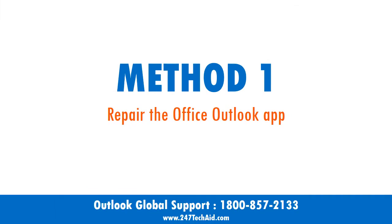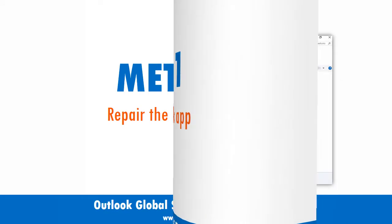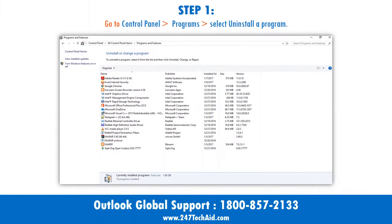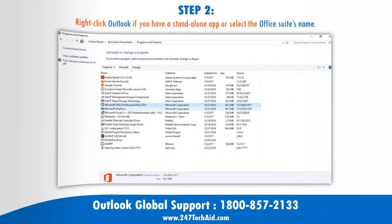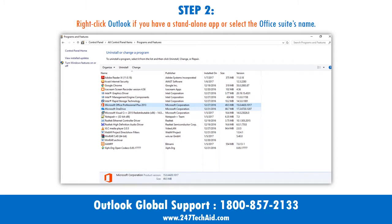Method 1: Repair the Office Outlook app. Step 1: Go to Control Panel, Programs, and select Uninstall a Program. Step 2: Right-click Outlook if you have a standalone app, or select the Office Suite name.